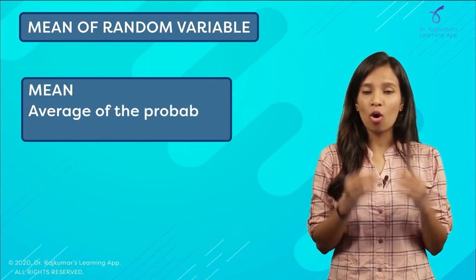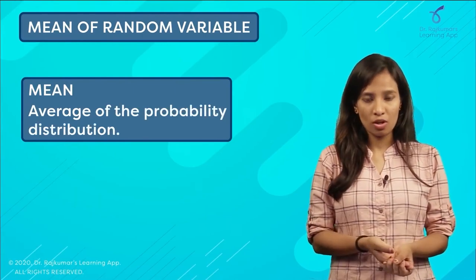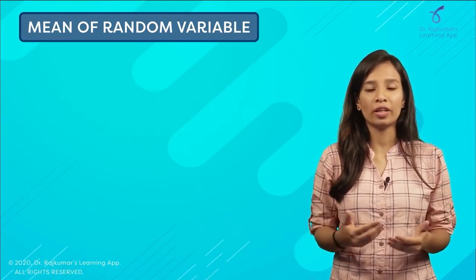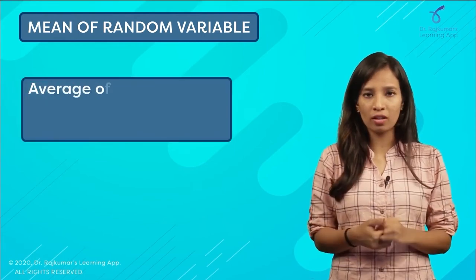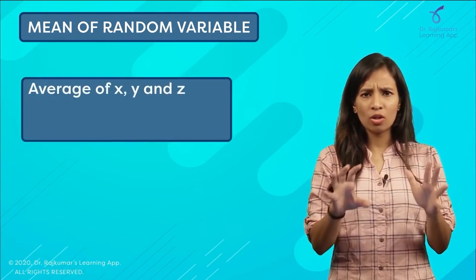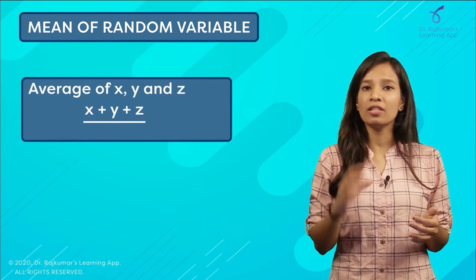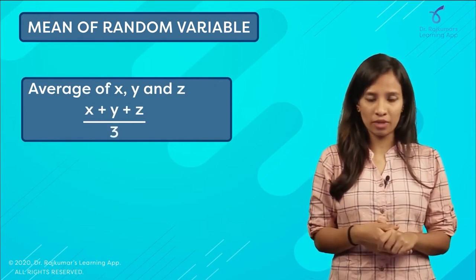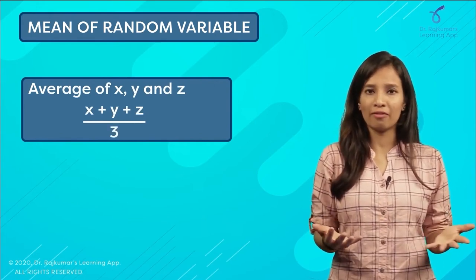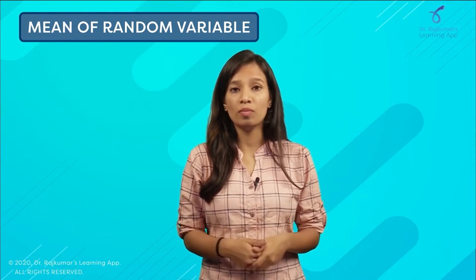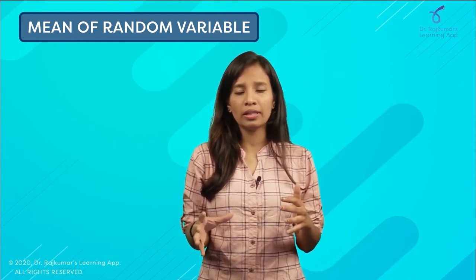Mean means average of our probability distribution. Normally, when you're asked to find the average of anything, you add your outputs and divide by the number of outputs given to you. That's how you normally find the average. In a probability distribution, you do it in a little different way.